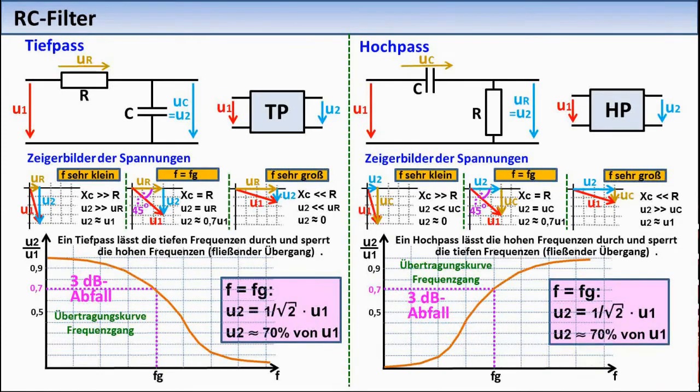The unit Bel or decibel will be discussed later. Since the transition between passing and blocking is very gradual, you can see that in these curves here, by defining the cutoff frequency, a tangible value has been created that enables the comparison of filters.